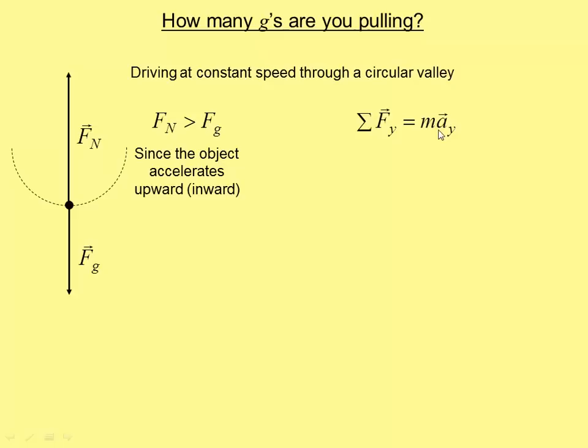So Newton's second law says that the net vertical force has to equal the mass times the acceleration. Well, the net vertical force is F_N minus F_g, since they're pointing in opposite directions. F_N is up, positive. F_g is down, negative. Since we're moving in a circle here at constant speed with an inward directed net force and acceleration, this isn't just any random acceleration. This is the centripetal acceleration. And since it's upward, inward, it's positive. So we get F_N minus F_g is the net force, and that has to equal a positive m*a_c.